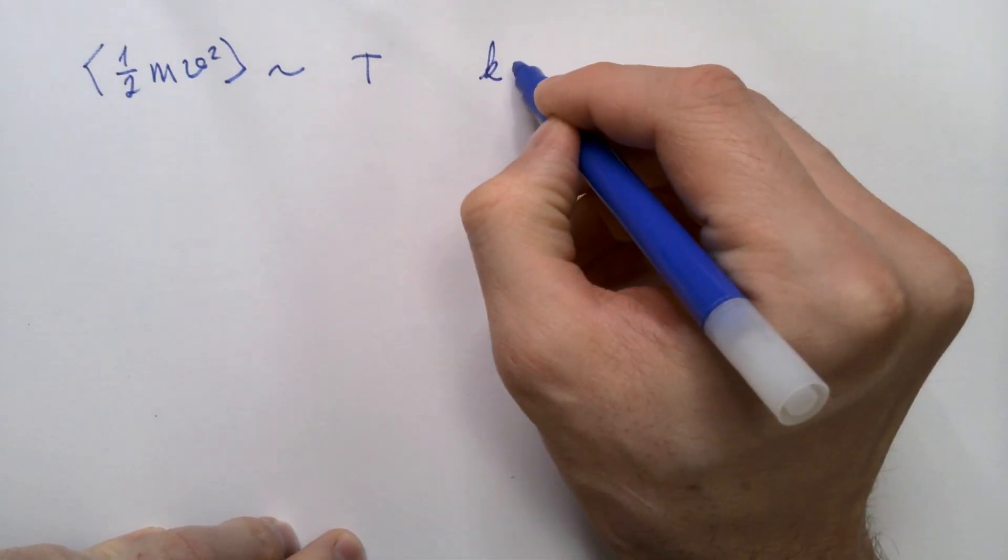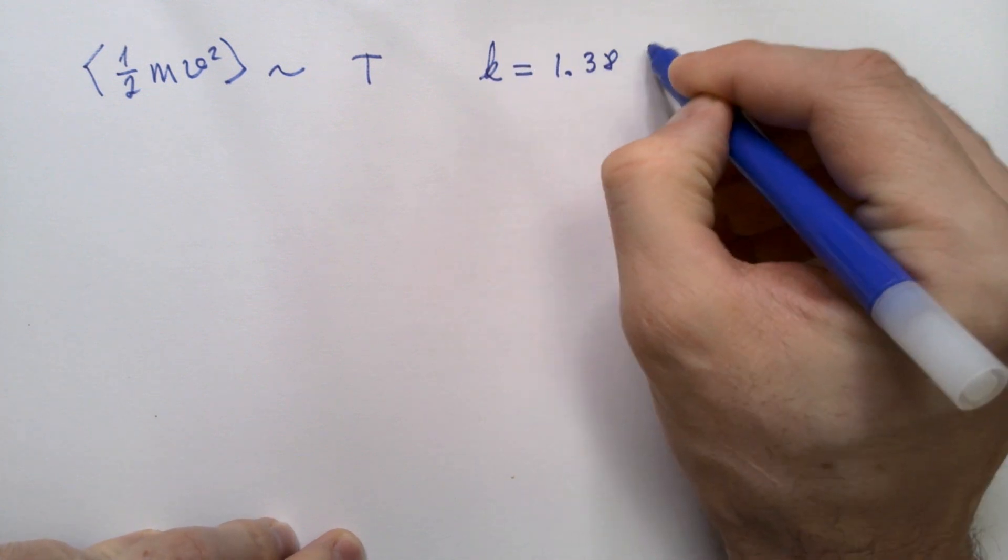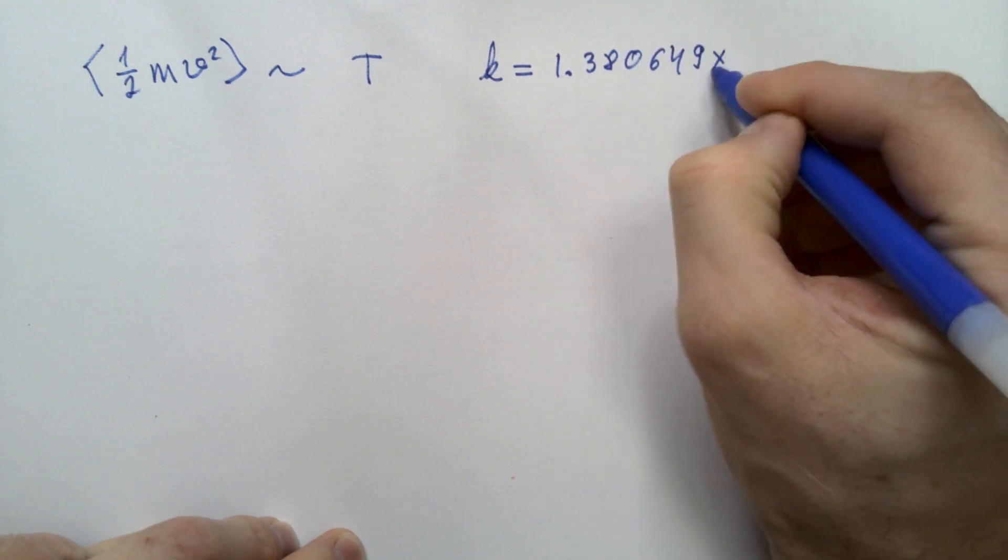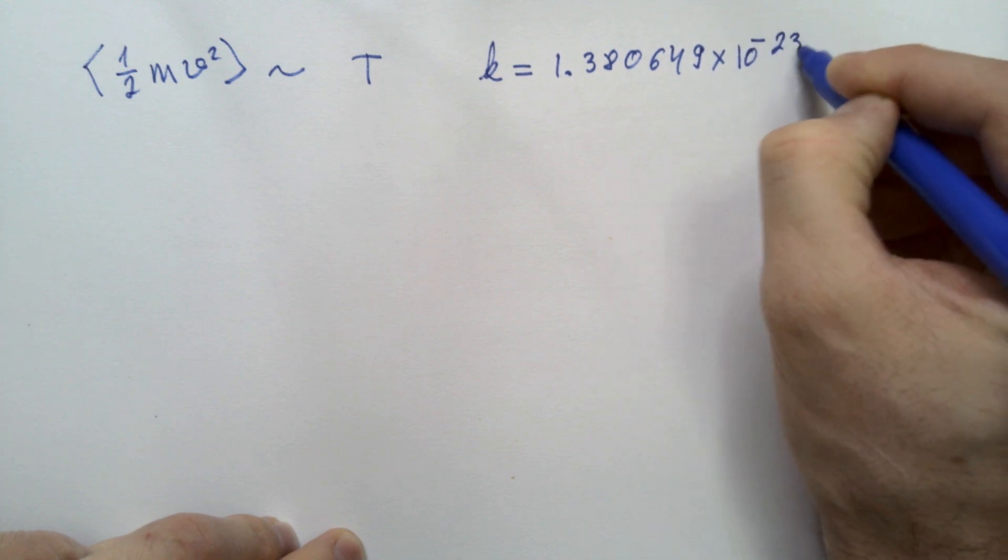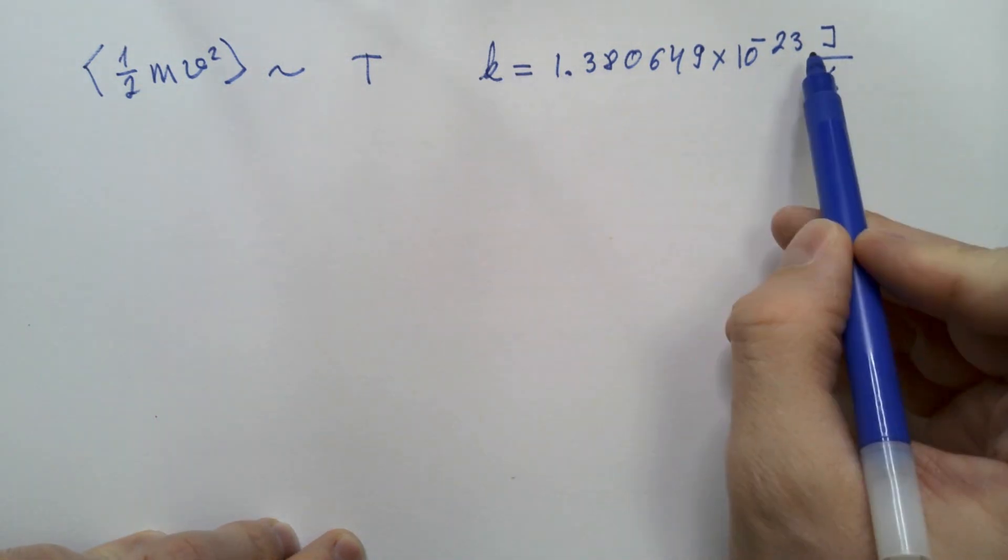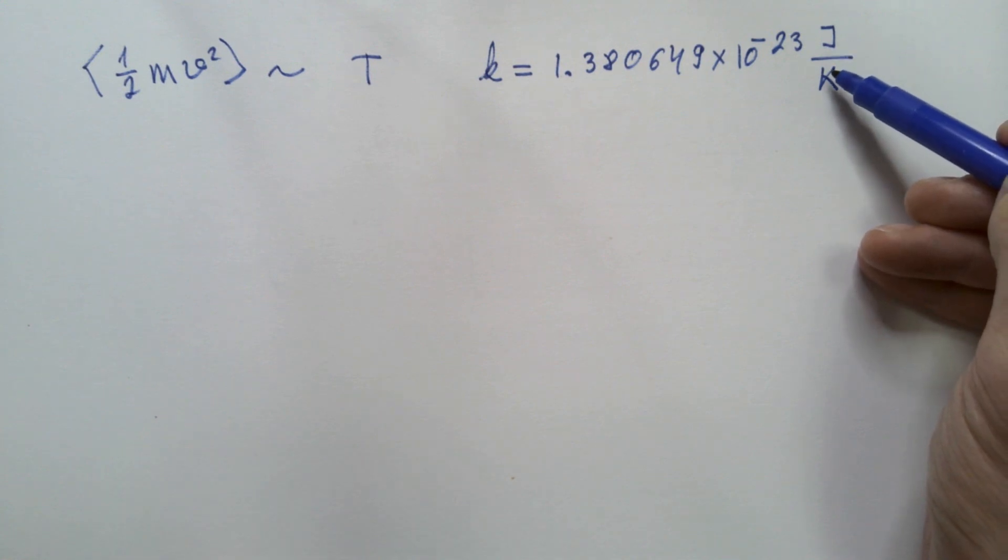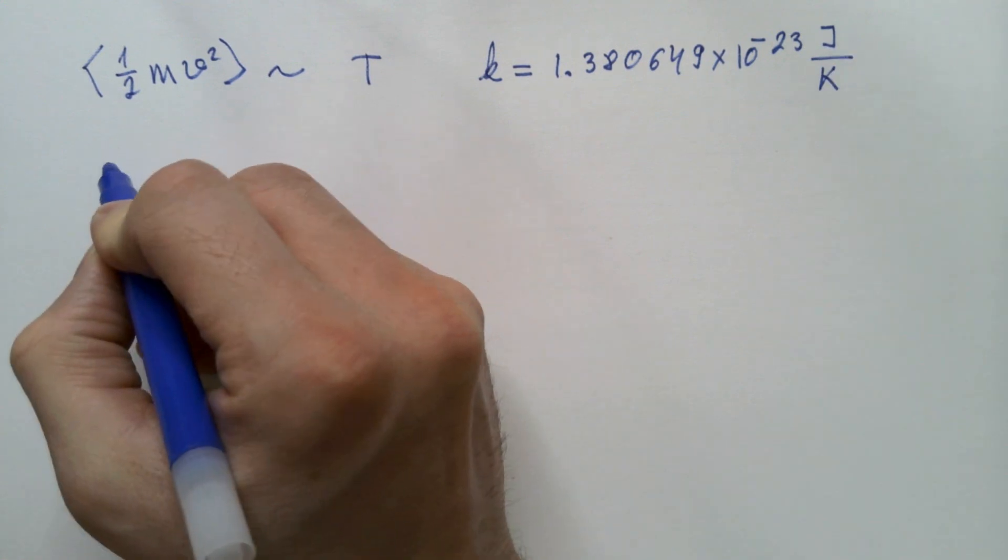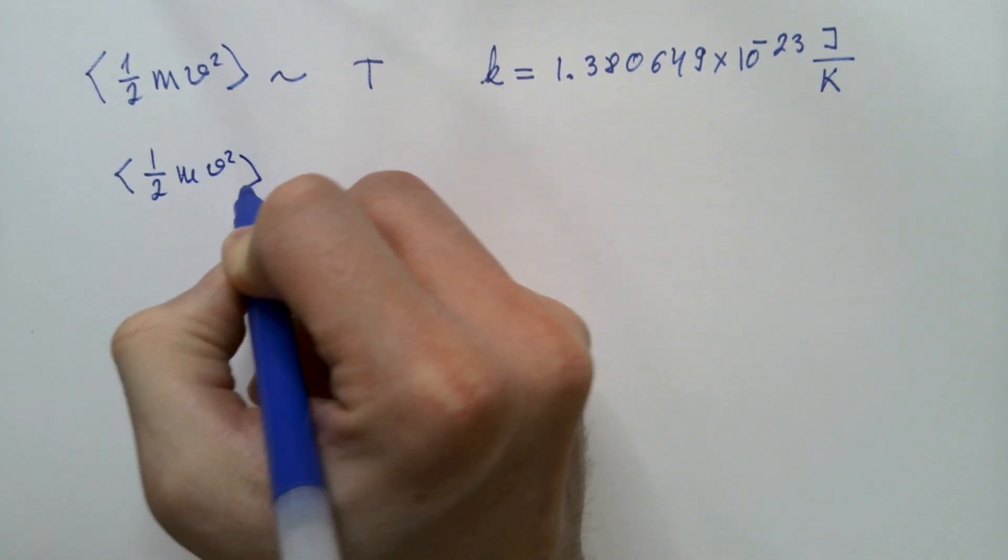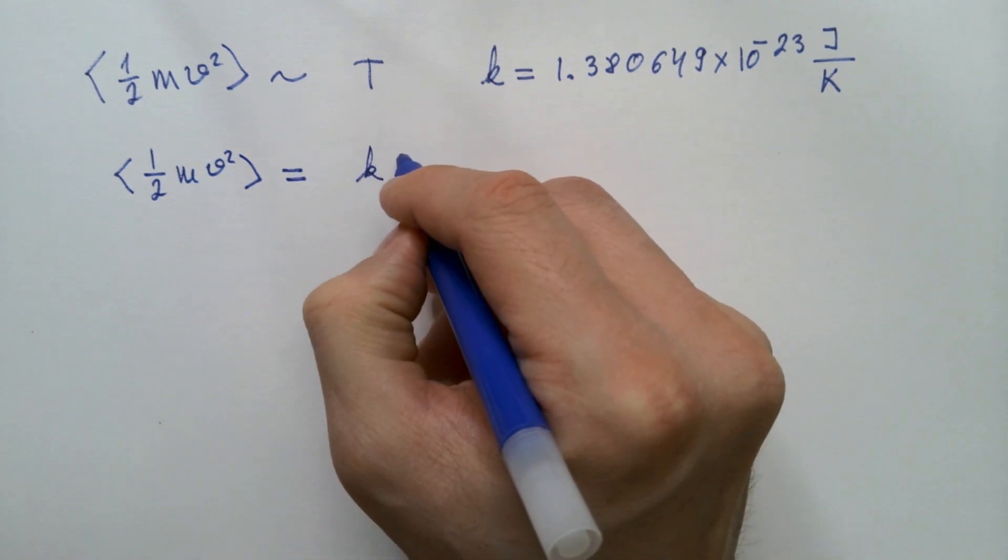And that constant of proportionality k is equal 1.380649 times 10 to power negative 23 joules per kelvin. As we can see, Boltzmann constant relates energy, which is given in joules, to absolute temperature that is given in kelvins. Therefore, we can write that average kinetic energy of the gas is equal this constant of proportionality times T.